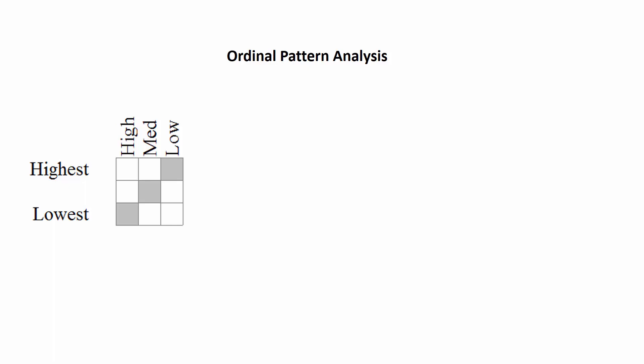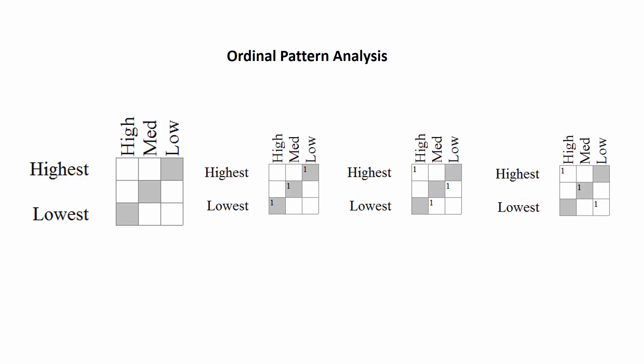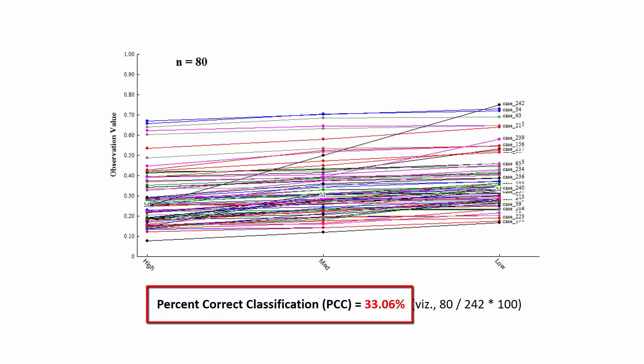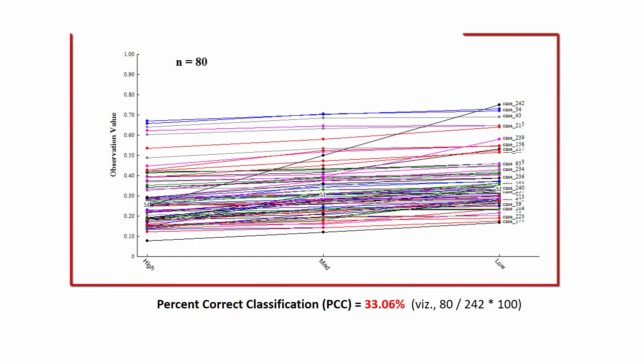Next, we examine each person in the study to determine if his or her errors match expectation. In one example, the ordinal relations among this person's errors matched expectation perfectly — the ones here indicate the ordinal pattern for the person's observed errors. In another example, the ordinal relations do not match perfectly. And for another person, the ordinal pattern of her errors was exactly opposite of expectation. Our primary question is how many individuals' patterns matched expectation. Analysis revealed that only 80 of the 242 persons matched expectation, reported here as a percent correct classification index, with individual errors shown for those 80 individuals in the graph.